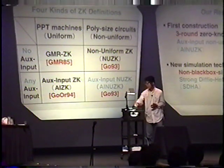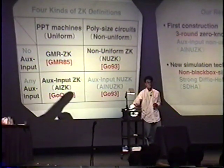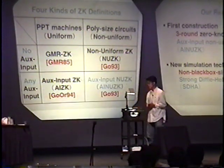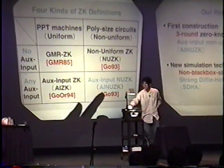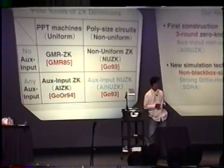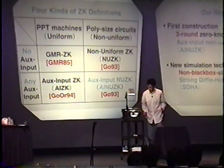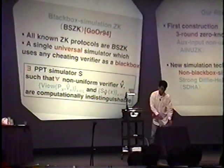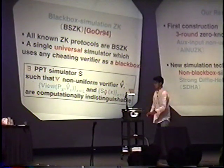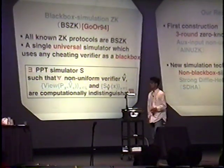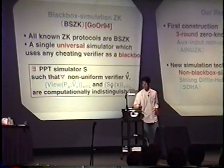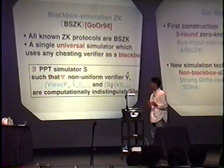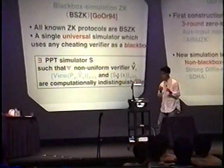So here we have four kinds of definitions of zero-knowledge. The GML zero-knowledge is the original definition. And the auxiliary-input zero-knowledge is here. And the non-uniform zero-knowledge is here. And finally, auxiliary-input non-uniform zero-knowledge. And our proposed protocol will satisfy this notion — this definition. There is another definition: it's a black-box simulation of zero-knowledge. It is the most famous because all non-trivial zero-knowledge properties have been demonstrated using this notion, using the black-box simulation.